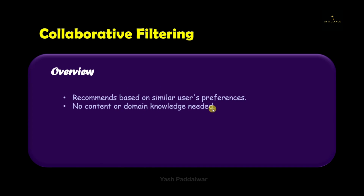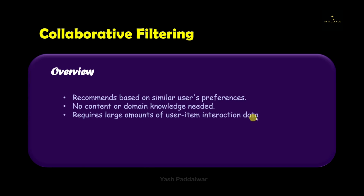No content or domain knowledge is required, because we don't need any keywords or important features for recommending items to users. For doing this task, it requires a large amount of user-item interaction data. Whenever the data is large, only then will it give the best results. Hence, it is widely used in big data.